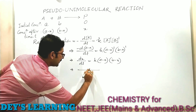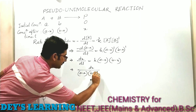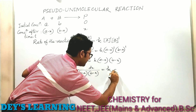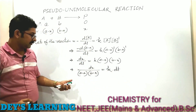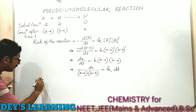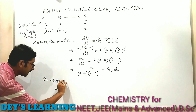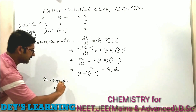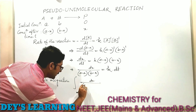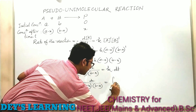Rearranging: dx divided by (A minus x)(B minus x) equals K dt. This is the differential form of the second order reaction. On integration, the equation yields the integral of dx over (A minus x)(B minus x) equals the integral of K dt.